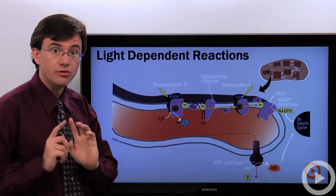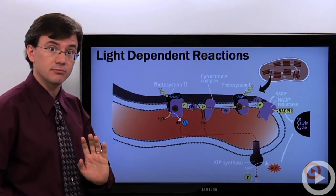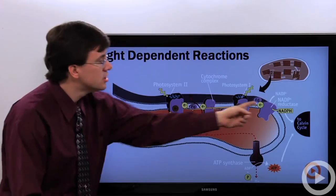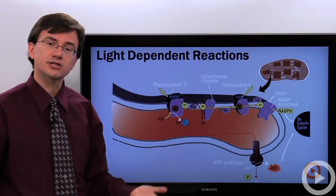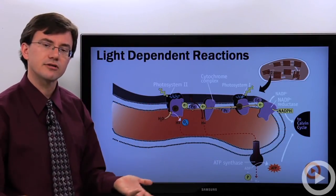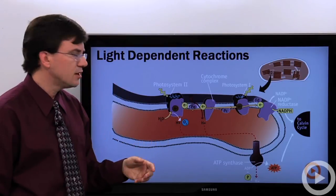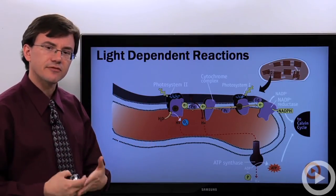That's one of the two things required by the Calvin cycle for it to operate and do carbon fixation. So the NADPH goes off to the enzymes that are floating around in the stroma to do the Calvin cycle. The last thing that we need to generate for the Calvin cycle is ATP.